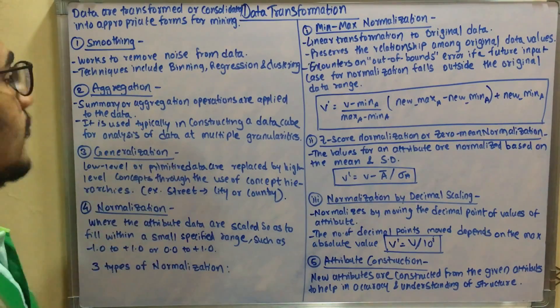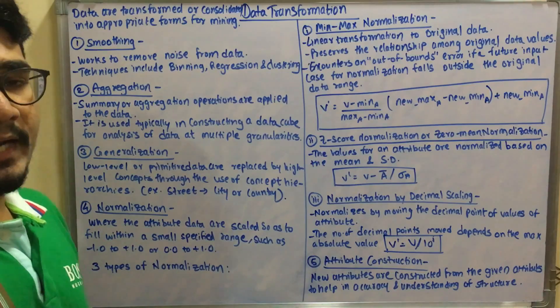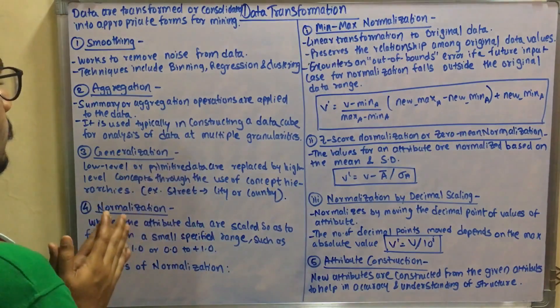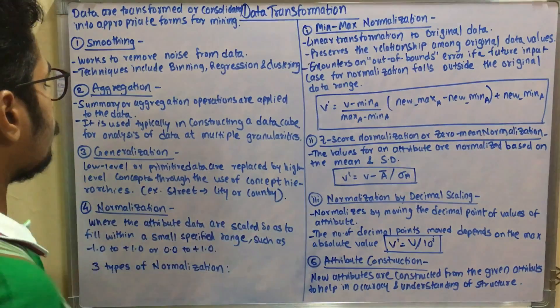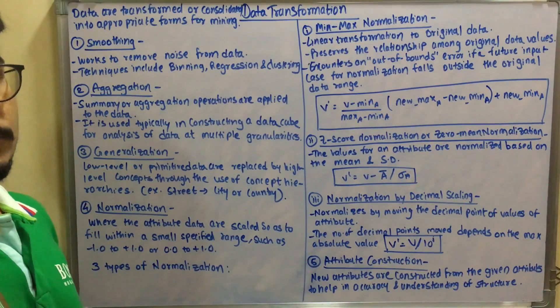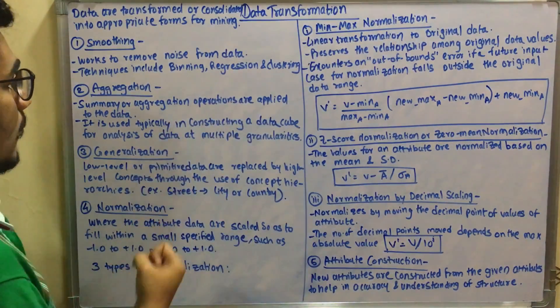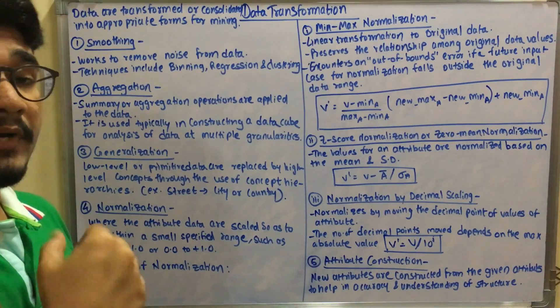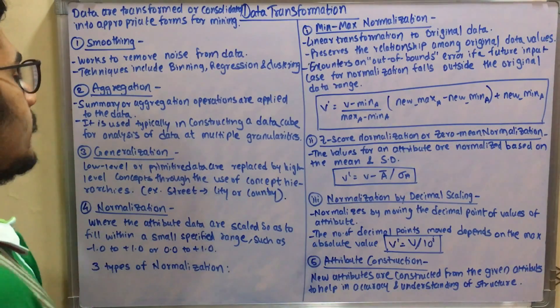Next we move on to aggregation. Aggregation is where summary or aggregation operations are applied to the data in order to consolidate it into appropriate form. It's used typically for constructing data cubes, especially OLAP cubes, and it's used for data analysis at different multiple levels of data granularities.